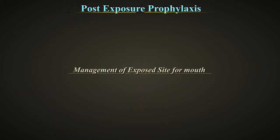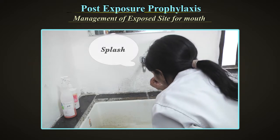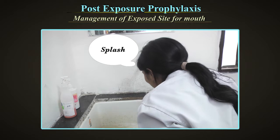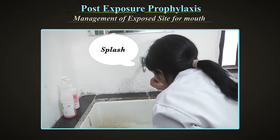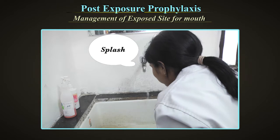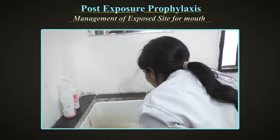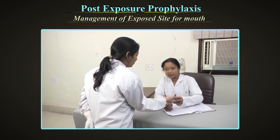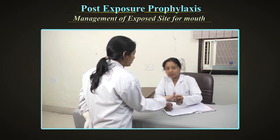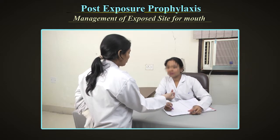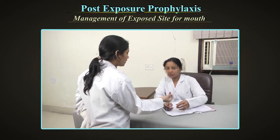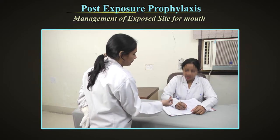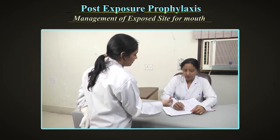For the mouth: spit fluid out immediately. Rinse the mouth thoroughly using water or saline and spit again. Repeat the process several times. Do not use soap or disinfectant in the mouth. The exposure must be reported immediately to the concerned authority so that, if required, prophylaxis can be started as soon as possible. Consult the nearest ART centre for PEP.